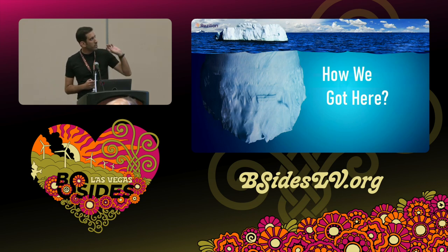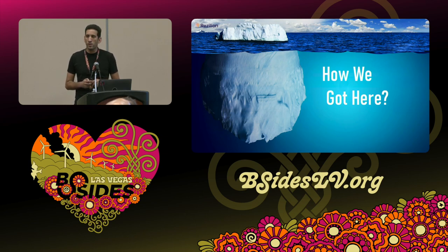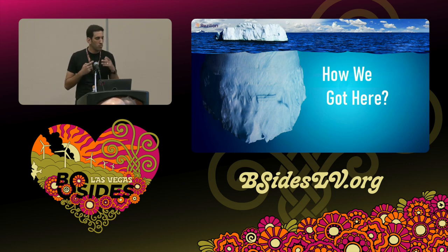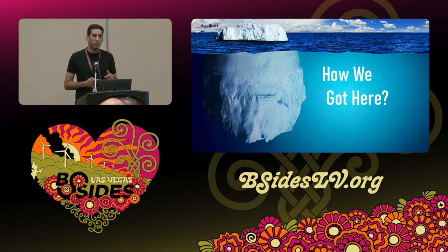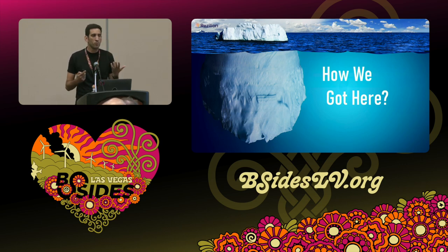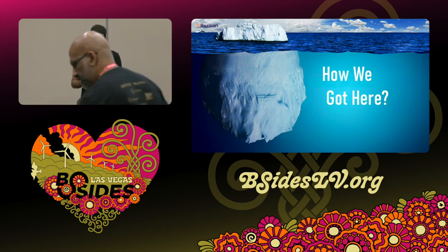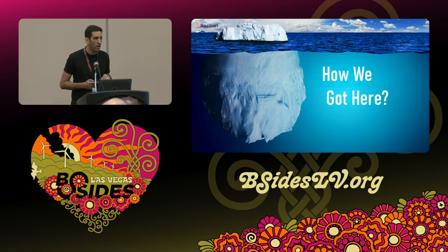The reason you see an iceberg here isn't because we're going to talk about climate change — this reflects the state of software supply chain. Currently, most code in your production environment isn't code that you wrote. We use third-party code, whether it's open source or commercial. That's good — it allows us to move fast and focus on our core business logic — but it also comes with risk.